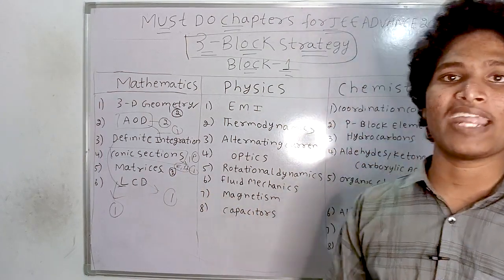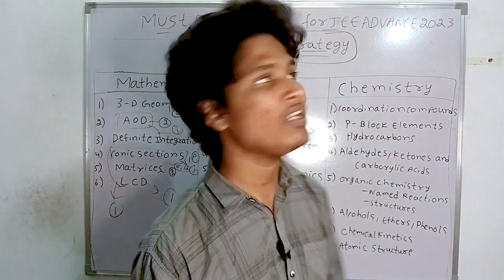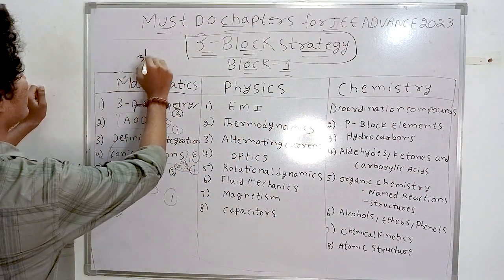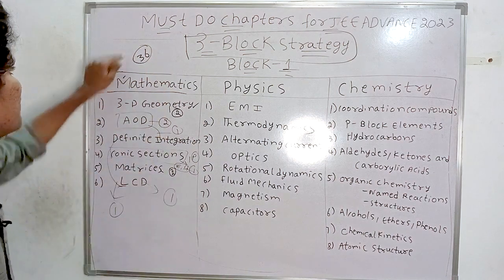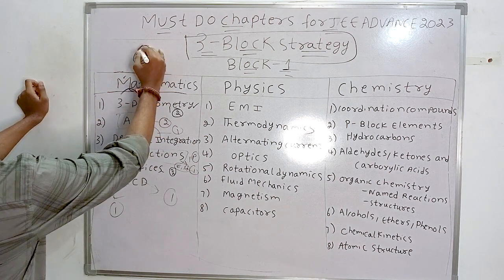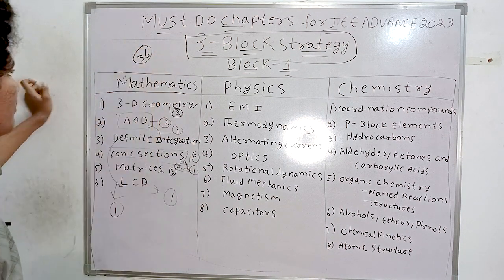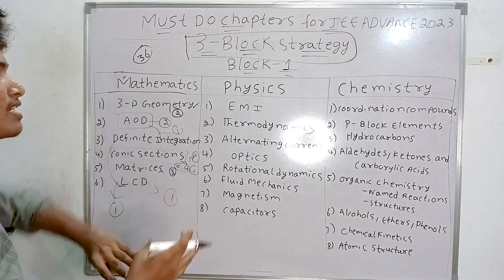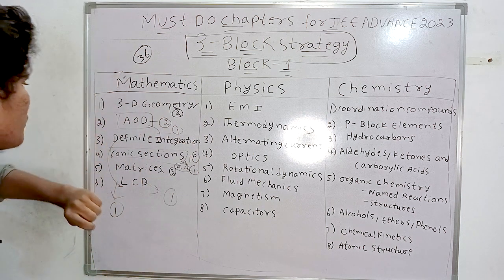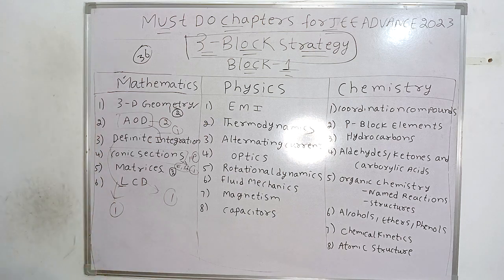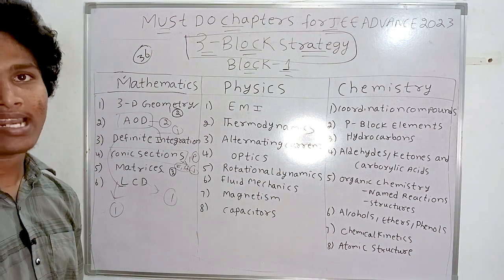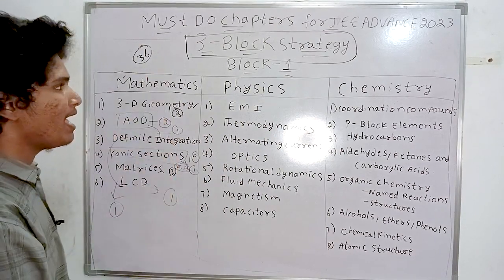Approximately nine questions, roughly 36 marks, you can easily get from block one. This makes it possible to get into top IITs. I'm referencing JEE Advanced 2022 to show you that these chapters are very important.